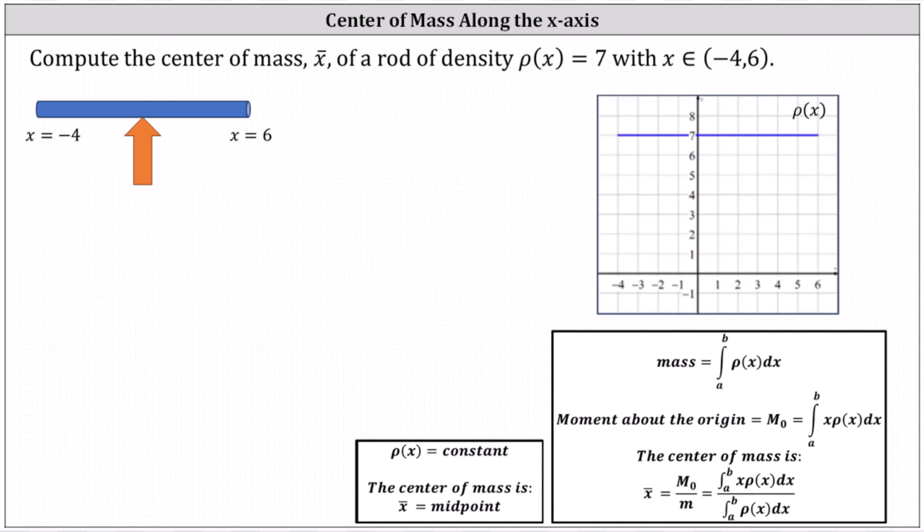Because the rod has constant density, the center of mass is going to be the midpoint of the rod, which means to determine the center of mass we can simply determine the average of negative four and positive six.